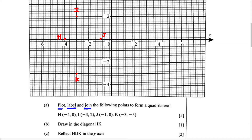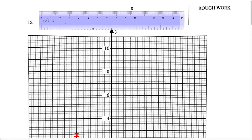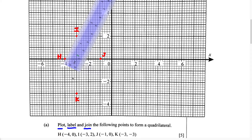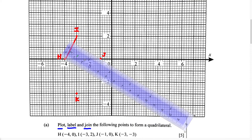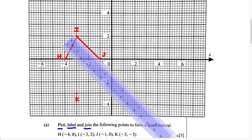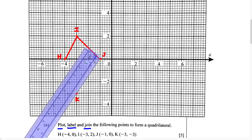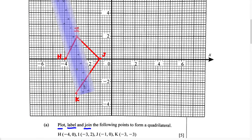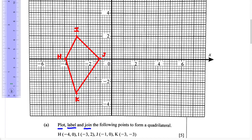Now that we have plotted the four points, we have to join them in order to form the quadrilateral. So just using your ruler, we're going to join these points. We can start with H to I, then go from I to J, then from J to K, and finally from K back to H. So we have successfully plotted, labeled, and joined these points to form the quadrilateral.